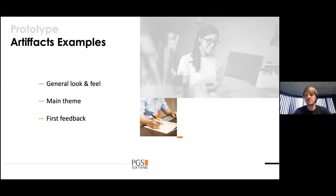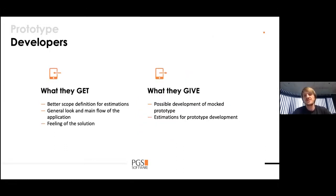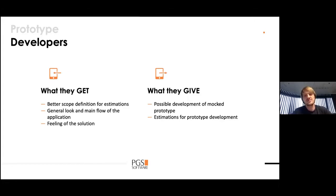What developers get from prototyping is a better scope for estimations. Estimating is a hard job, and proper estimations before delivery should be done after this phase, because then you get an idea of how the UI will look. The UI is a big part of estimation for mobile projects — you get it here in good detail, not just a description from the UI designer. You also get a general look and feeling of the solution, which can help developers understand what they will be building.